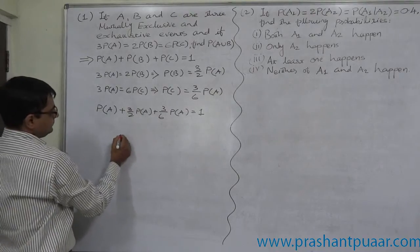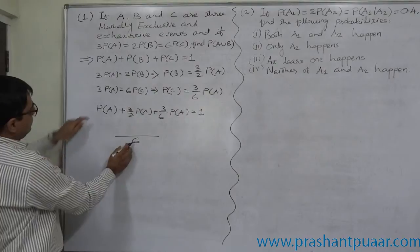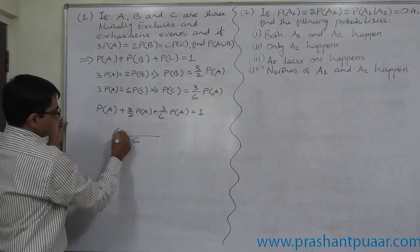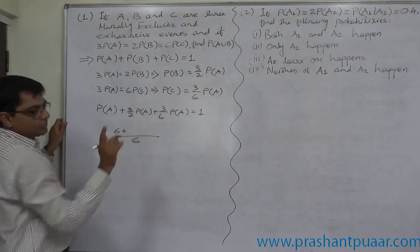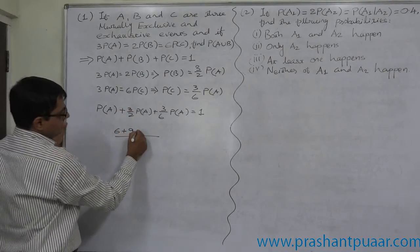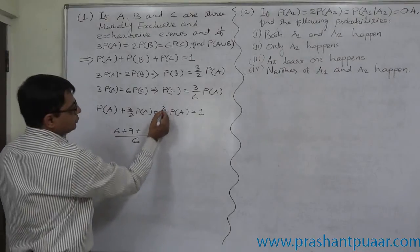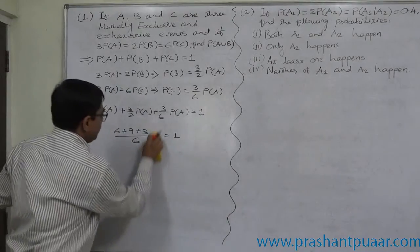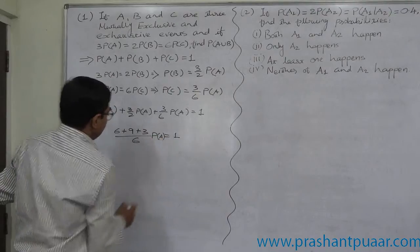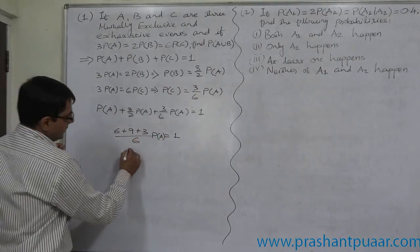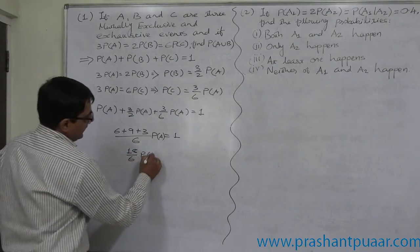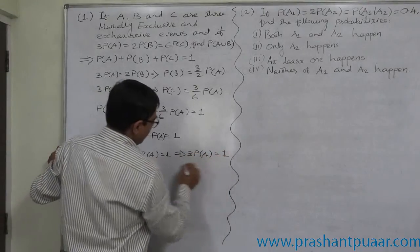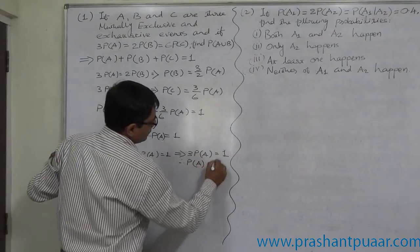Now 6 is the LCM. So: 6/1 = 6, giving 6 · P(A); plus 6/2 = 3, giving 9 · P(A); plus 6/6 = 1, giving 3 · P(A). That means 6 plus 9 plus 3 = 18, so 18/6 · P of A equals 1. That means 3P of A equals 1, therefore P of A equals 1/3.